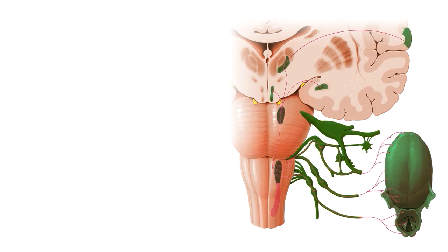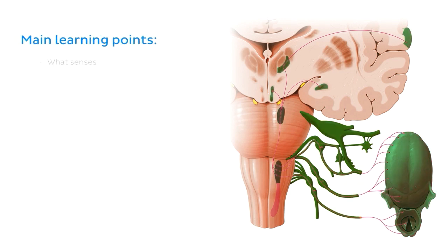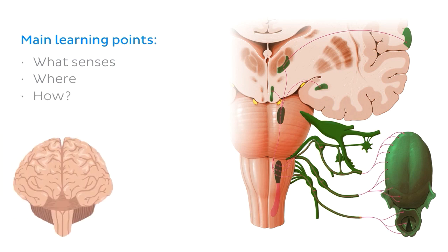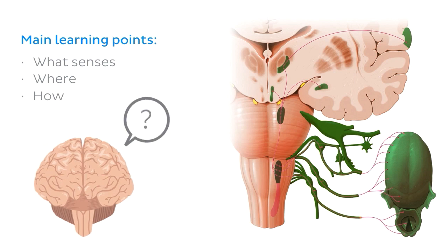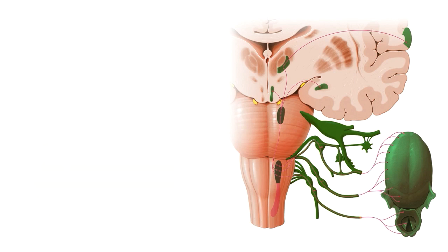Therefore, our main learning points for today are: what senses are involved in taste, where taste is sensed, where it is processed within the brain, and how the taste signals are transmitted from the sensory organ to the brain. So let's begin with an overview of the sensation of taste.